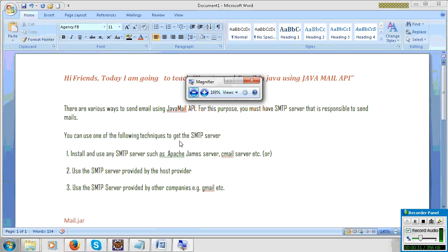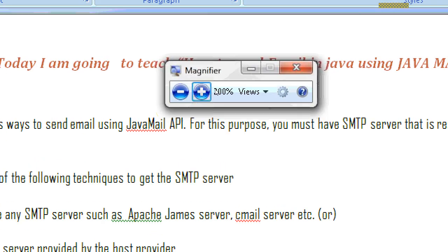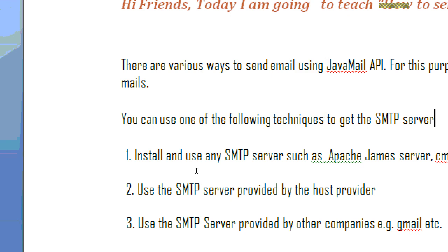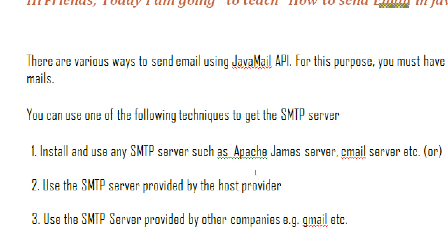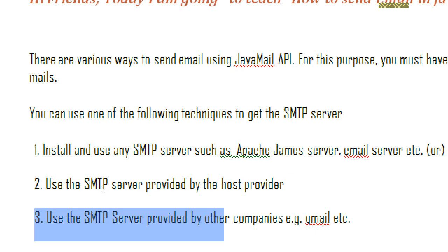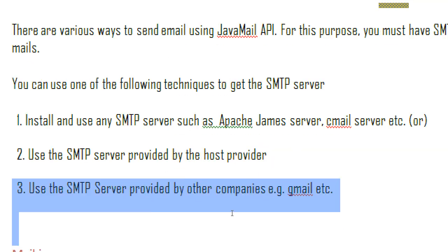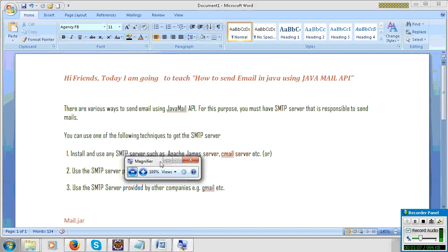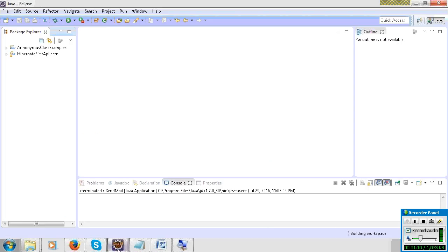So how will we get the SMTP server? There are three ways to get the SMTP server. First, install an SMTP server, like Apache James email server. Second, use your office SMTP server. Third, use an SMTP server provider like Gmail or Yahoo Mail. I am using Gmail.